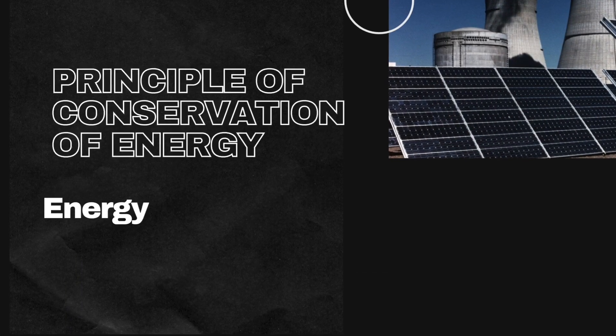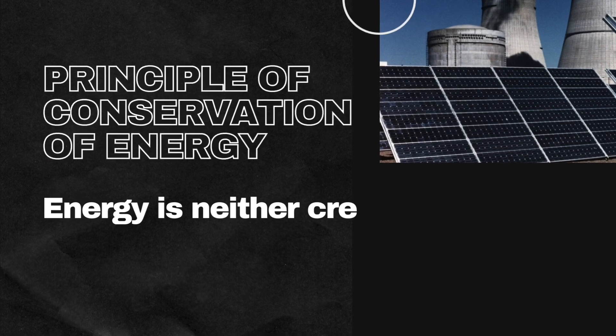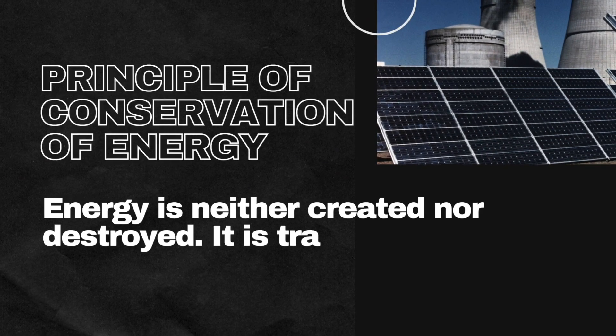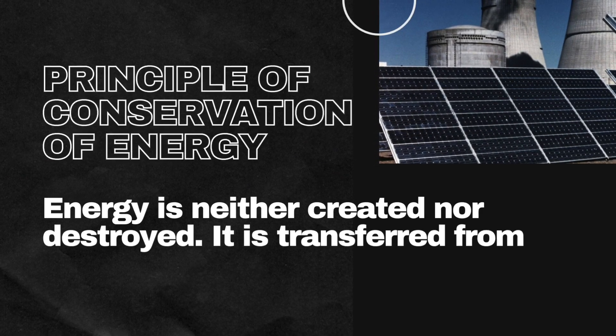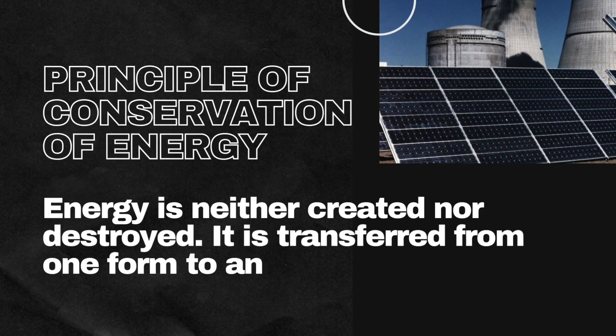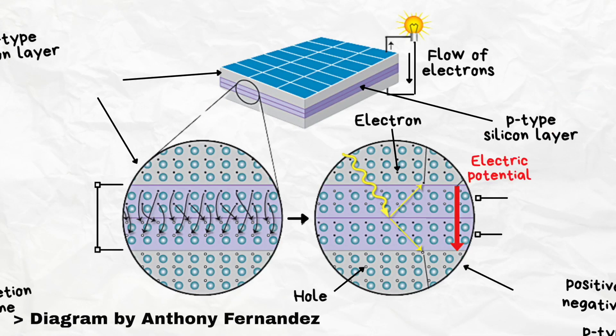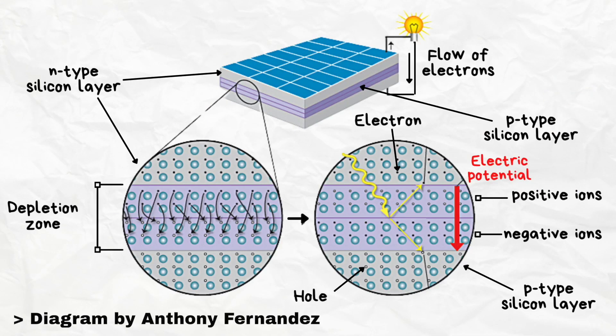The principle of energy conservation states that energy is neither created nor destroyed — it may transform from one type to another. Solar panels are made of smaller units called solar cells, which are usually made from silicon.